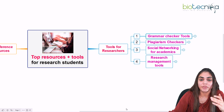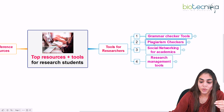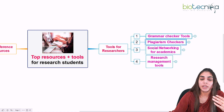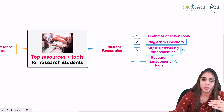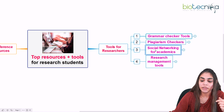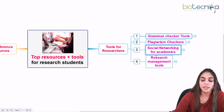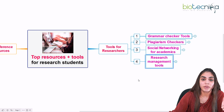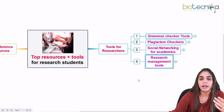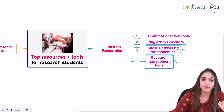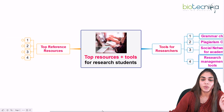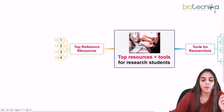This is all about the research management tool. To summarize the tools discussed: grammar checking tools to correct grammatical mistakes, plagiarism checkers to ensure your manuscript won't be rejected, social networking to get connected with scientists and researchers across the globe, and research management tools to manage your literature, insert references, and maintain bibliographic references.